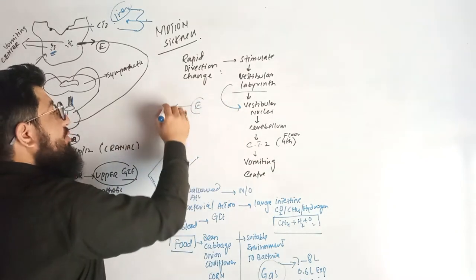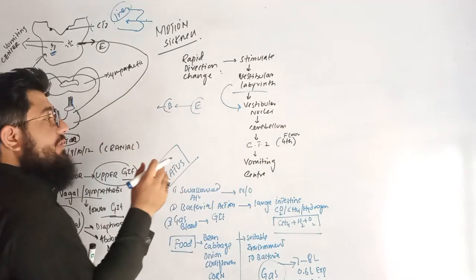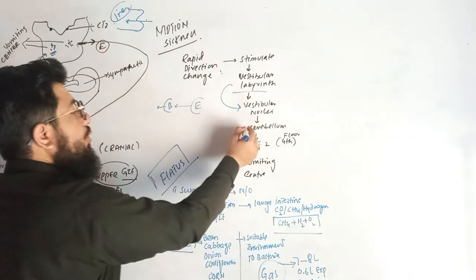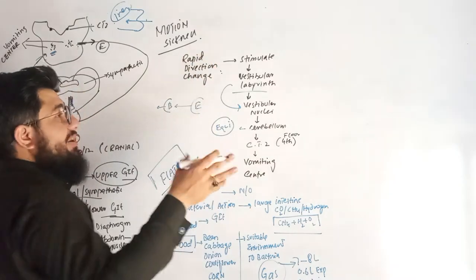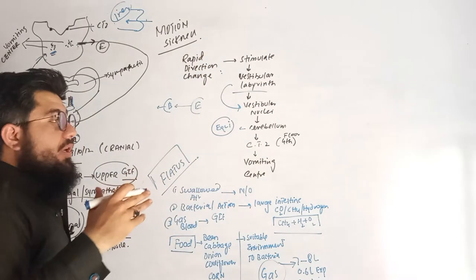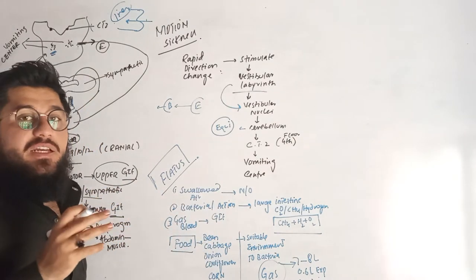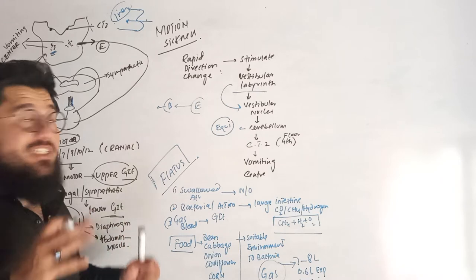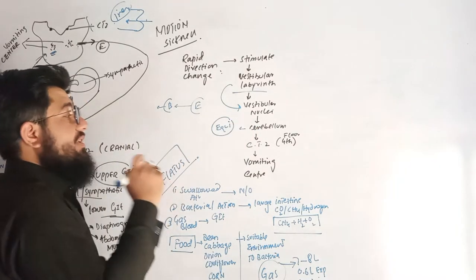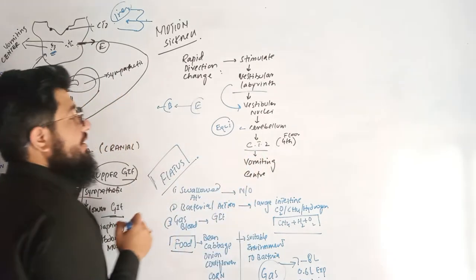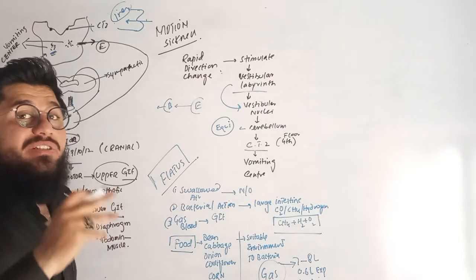From the ear, a message is given to the vestibular labyrinth, which is a portion connected to the brain. Within the brain we have the hindbrain, and in the cerebellum, which is responsible for maintaining equilibrium. When you are in rapid movement, the cerebellum does not get the proper signals — it becomes a kind of imbalanced — so a signal is given to the cerebellum.